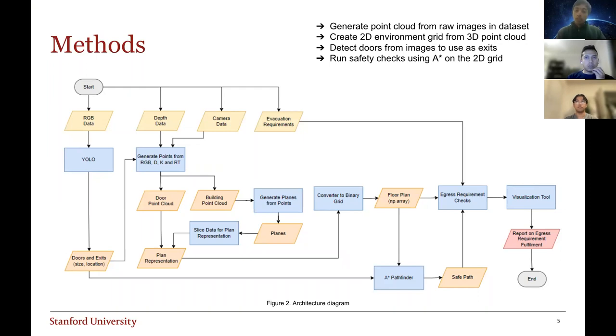We then run a YOLO CNN on the RGB images to detect any doors in the scene, then project these doors into the world space, and finally convert that into points on our grid that we can use as our exits.